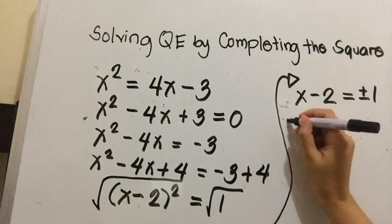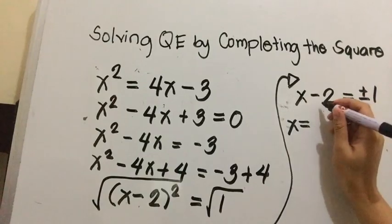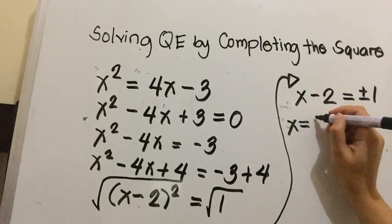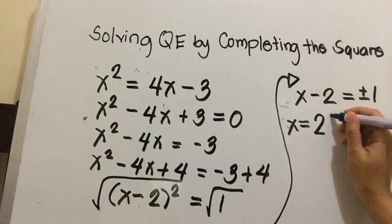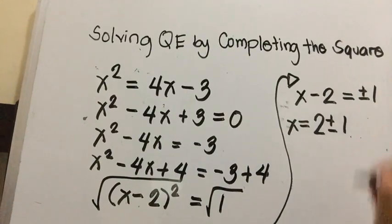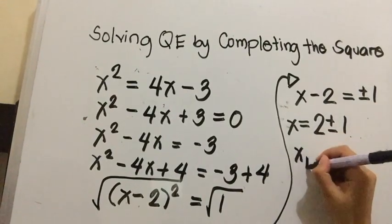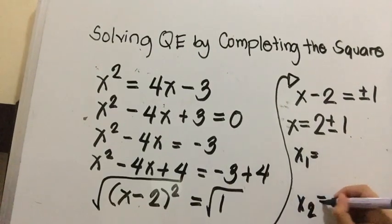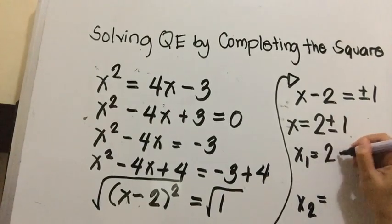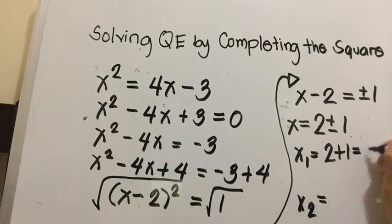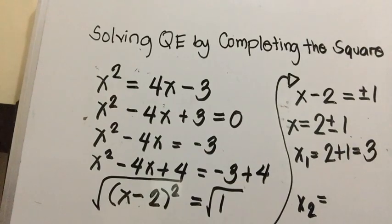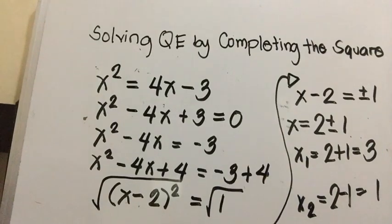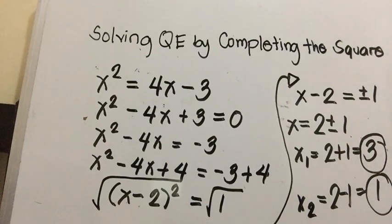Then we're going to have x equal to: transpose negative 2, that becomes positive 2, then copy plus and minus 1. So we're going to have two answers, x₁ and x₂. 2 plus 1 is equal to 3, and 2 minus 1 is equal to 1. So the two values of x are 3 and 1.